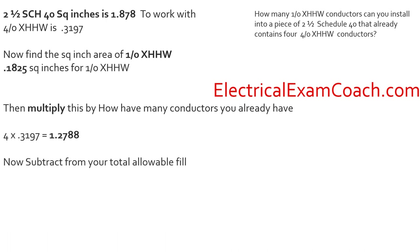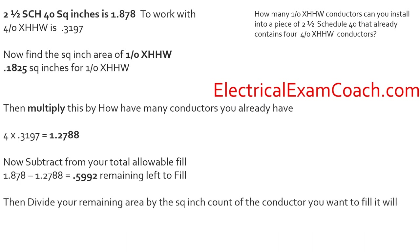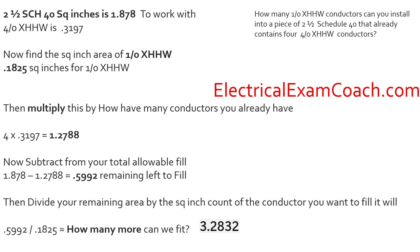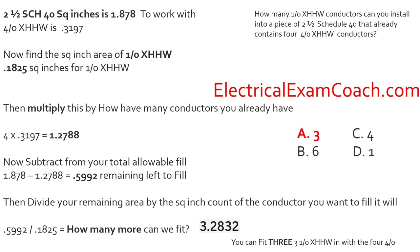Now we multiply: 4 × the 4-aught area gives us the space already used. Subtract that from 1.878 to find remaining space. Then divide remaining space by the individual 1-aught area and we get 3.28. That is below 0.8, so we round down and we can fit three more 1-aught XHHW conductors in the conduit.